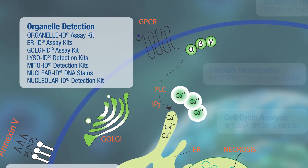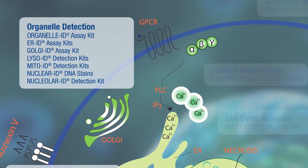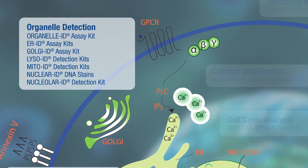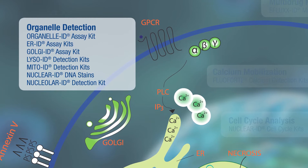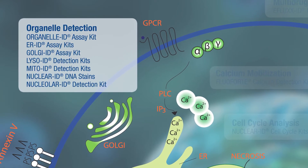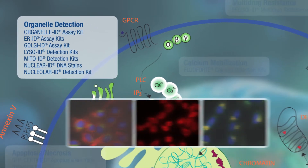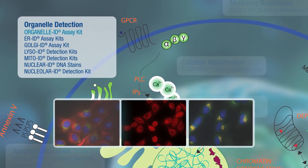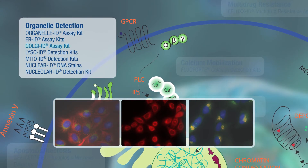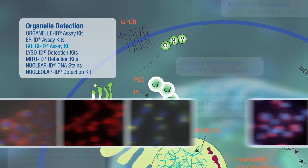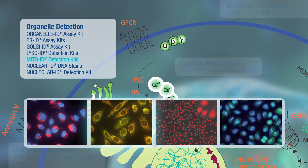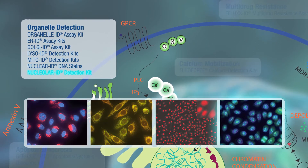Providing one of the most comprehensive organelle-specific dyes for monitoring structural changes in response to chemical or environmental stresses, Enzo's organelle detection kits stain for the endoplasmic reticulum, Golgi apparatus, lysosomes, mitochondria, nucleus, and nucleolus.